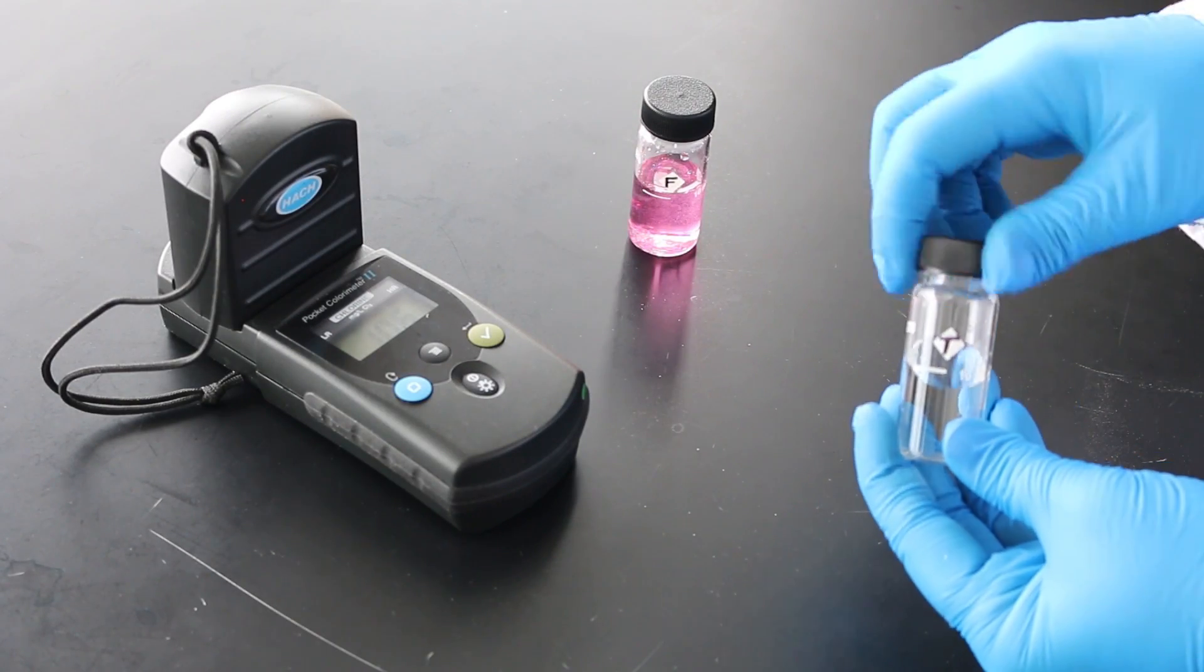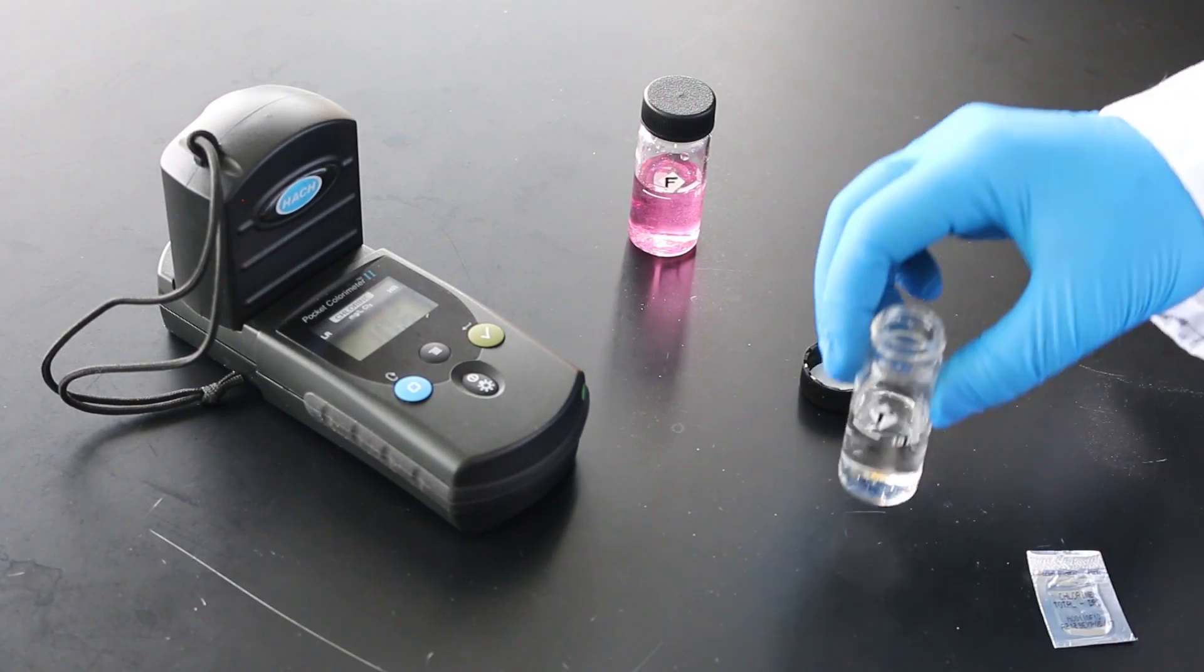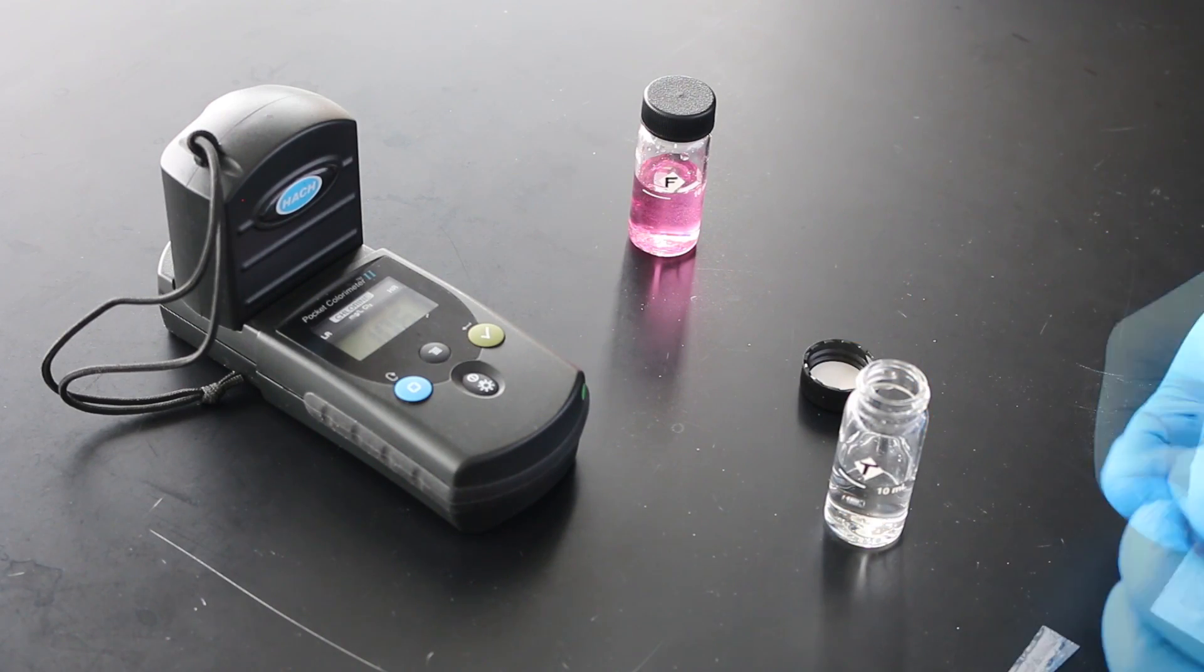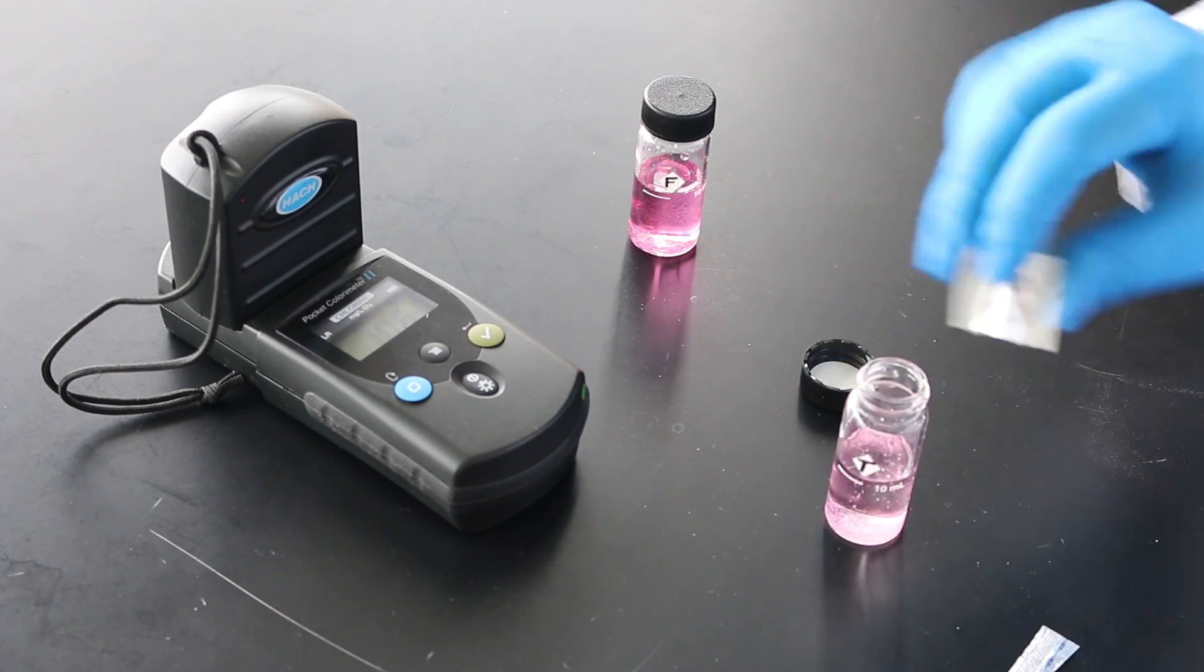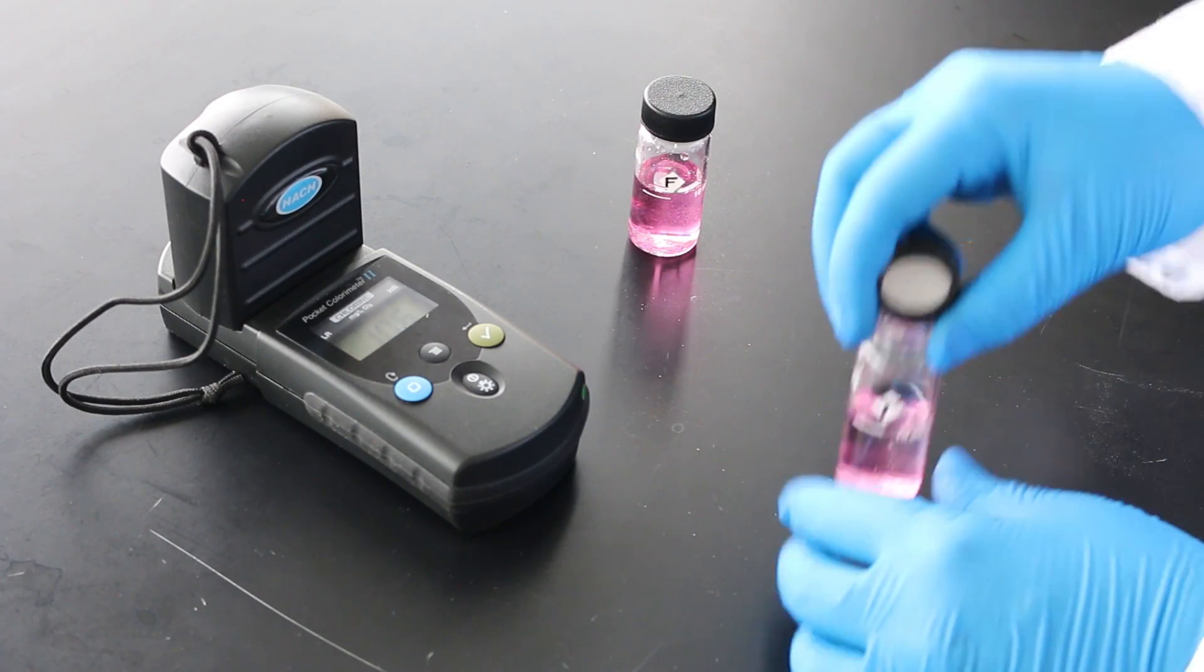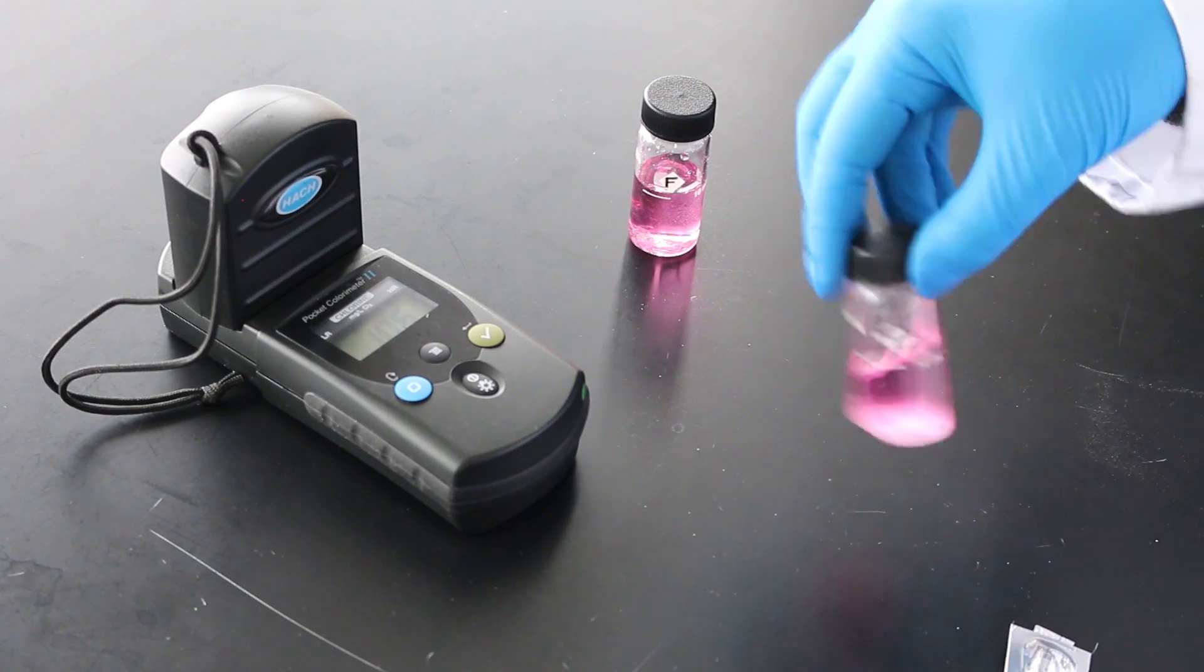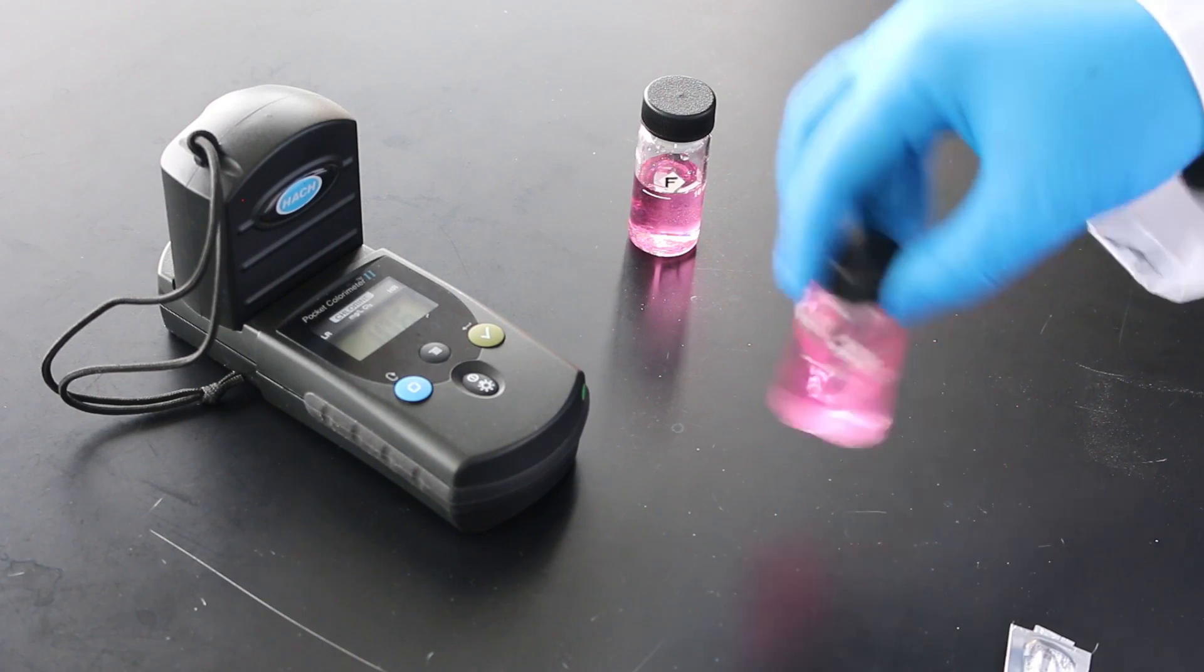It is important to note that if free and total chlorine are both being analyzed by an operator, different dedicated cells should be used for each method. This is because trace DPD reagent can be carried over and will interfere with your residual chlorine readings.